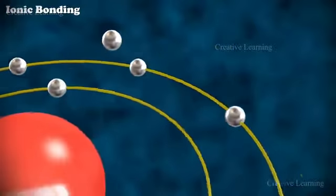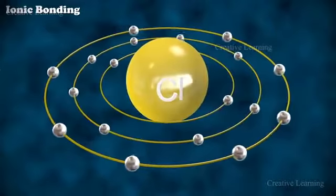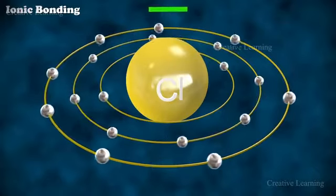The chlorine atom receives one electron to achieve its stable octet configuration. This creates a negatively charged anion due to the addition of one electron.